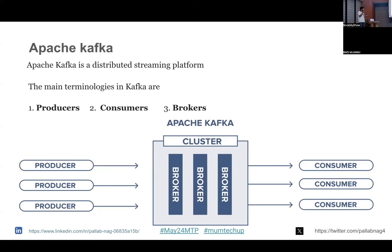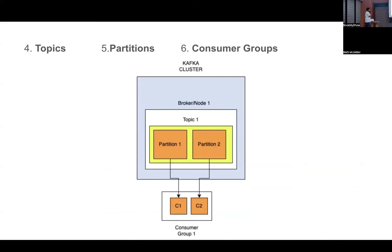The first term is producer — basically your message producers whose task is only to produce messages to the queue. Then we have consumers — their task is to consume messages from the queue. Then we have brokers — basically nodes. If I've deployed three servers, each server is a broker for my Kafka cluster. Next we have topics — they are basically the queue in the Kafka world. In Kafka, a single topic is partitioned; in this use case Kafka has created two partitions.